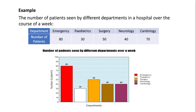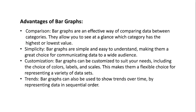Example: the number of patients seen by different departments in a hospital over the course of a week. Emergency department: 80 patients, Pediatrics: 30 patients, Surgery: 50 patients, Neurology: 40 patients, and Cardiology: 70 patients. The bar graph displays this data — the red bar represents the Emergency department, white represents Pediatrics, yellow represents Surgery, brown represents Neurology, and violet represents Cardiology. All bars are aligned according to the number of patients in each department.